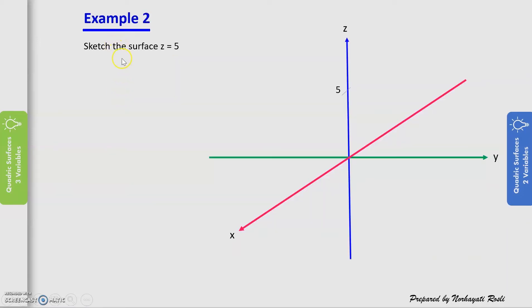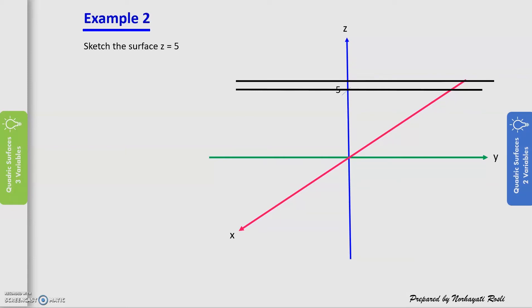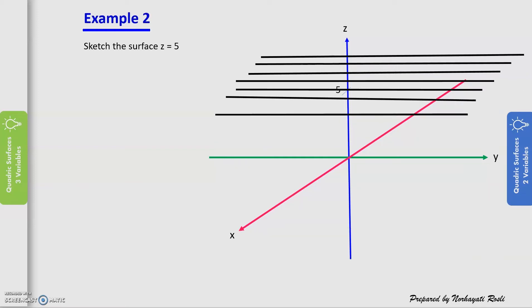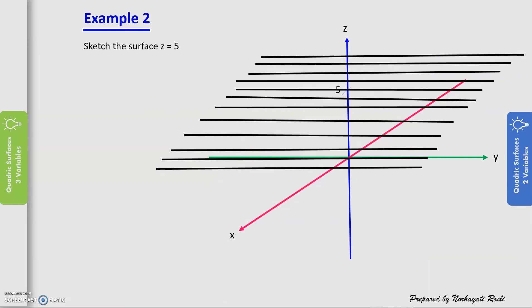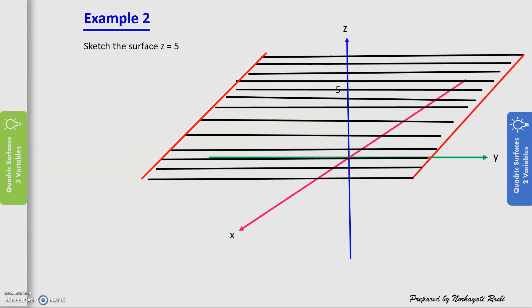Example 2: sketch the surface of z = 5. A point at z = 5 is identified, and a straight line is drawn through it. Since plotting in 3D requires a plane rather than just a line, we draw parallel lines to the left and right of this initial line at z = 5, and from these we construct the corresponding plane.